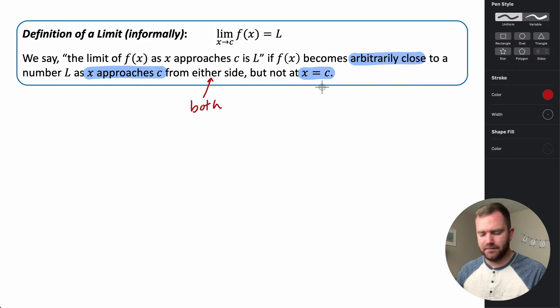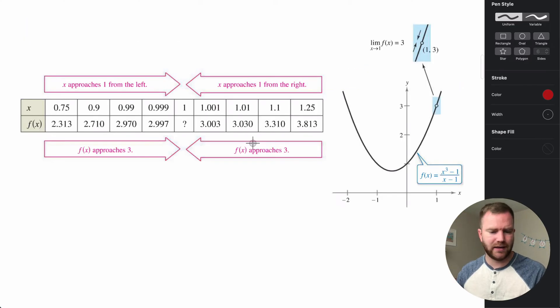it doesn't impact the limit. The limit is basically, as we come from both directions, what number is it getting close to, but not necessarily at that number. So if we take a look at this example, we have this curve defined by f(x) = (x³ - 1)/(x - 1). Since the numerator has a factor of x - 1 in it,